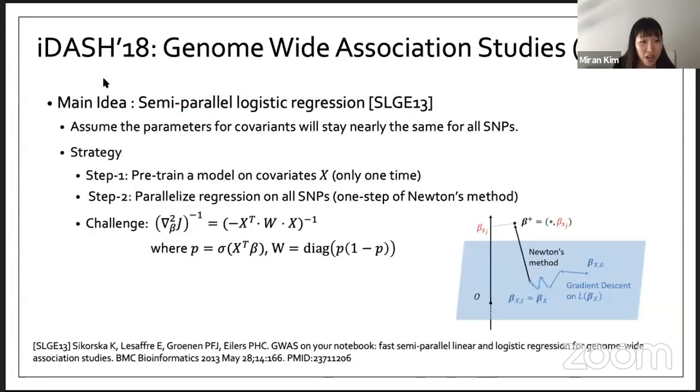The iDASH organizer recommended to use a very HE-friendly logistic regression model which is called semi-parallel logistic regression. The main idea is that we can assume that the parameters of covariates will stay nearly the same for all SNPs. So we can divide into two steps. The first step is just pre-train model on covariate X. This covariate has very small dimension, just three dimensions, just the number of columns is three. We can build a model just one time. After that, using the trained model as a starting point, we can find the model parameters of each individual SNPs more accurately, maybe in parallel.